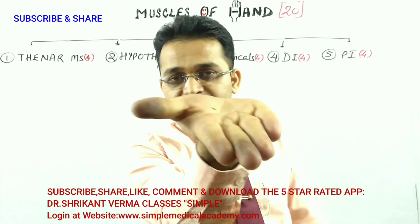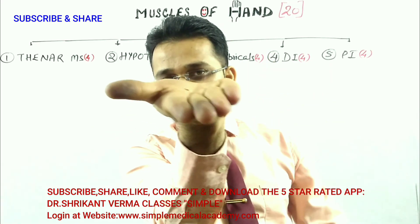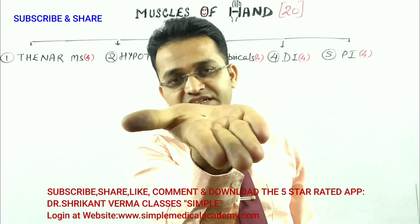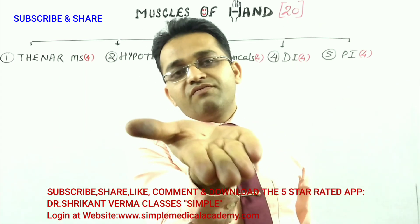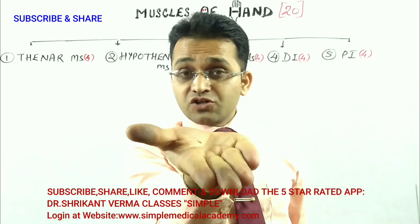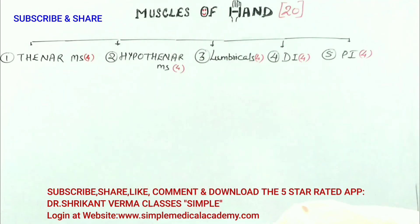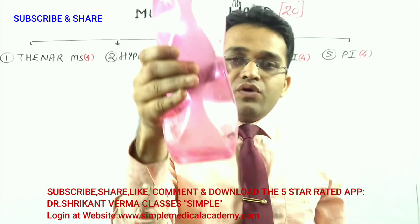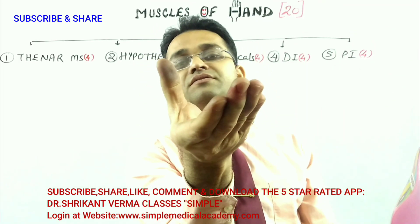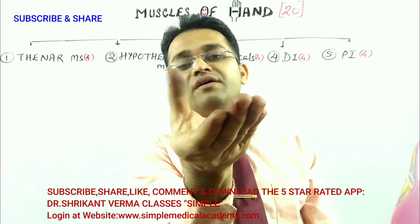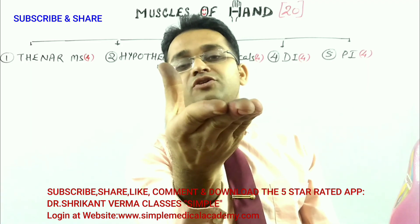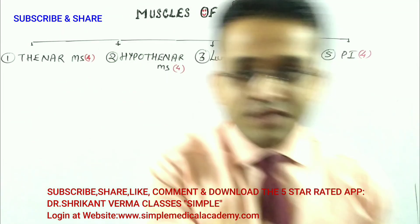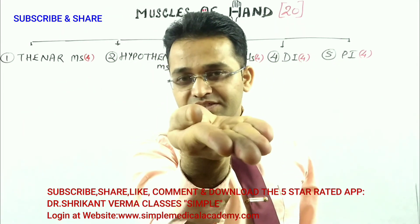The movement of the thumb which is parallel to the palmar surface is known as flexion and extension — decrease in angle is flexion, increase in angle is extension. For abduction and adduction: holding a bottle or glass — that position is abduction, meaning away from the midline. Moving the thumb towards the other fingers is adduction. Remember: 90 degrees to the palmar surface is abduction and adduction.